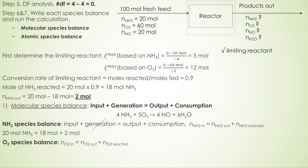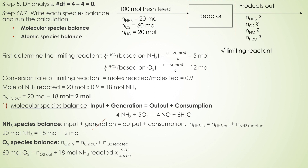Next, the oxygen species balance. Oxygen is the same as ammonia — there is no generation of oxygen from the reaction, so we cancel the generation term. Therefore: oxygen input equals oxygen output plus oxygen consumption. Input is 60 moles. Using stoichiometry and the moles of ammonia reacted, we calculate oxygen consumed as 22.5 moles. So oxygen output equals 60 minus 22.5, giving 37.5 moles of oxygen in the output stream.